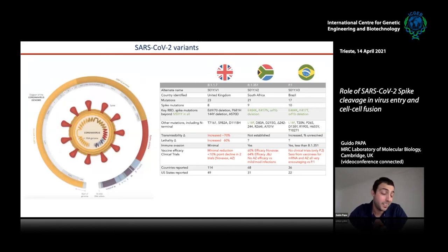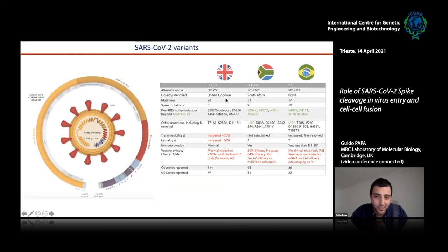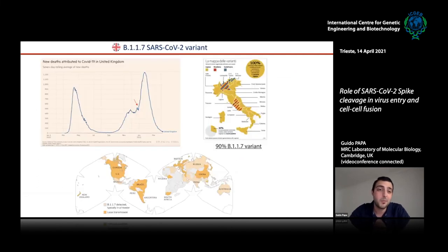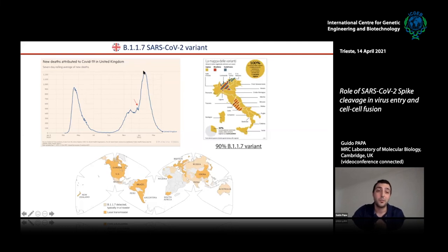Some countries did better at sequencing than others and identified several variants of concern: one in South Africa that evades vaccine-induced immunity, one in Brazil, and the B.1.1.7 variant in the United Kingdom. The UK variant did not escape neutralizing antibodies but showed high transmissibility and probably high lethality. By January, it had triggered a third wave in the UK with more than 1,300 deaths per day, and it was spreading globally. In Italy, more than 90% of circulating variants were B.1.1.7.